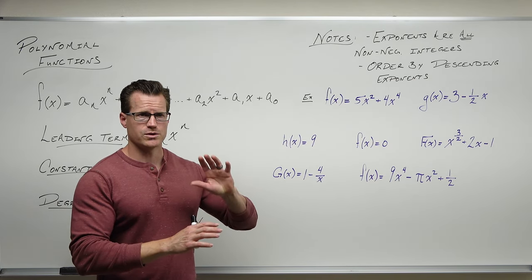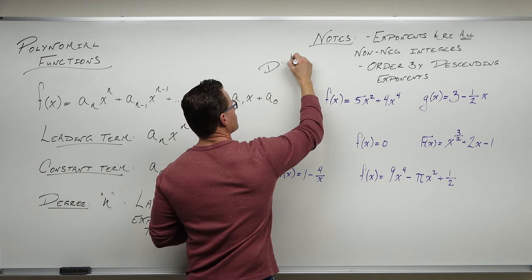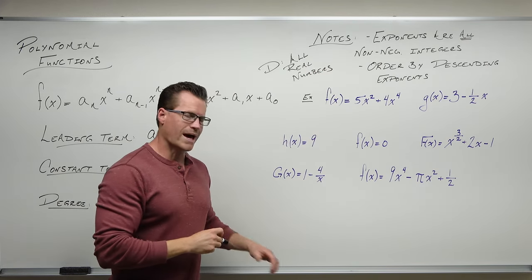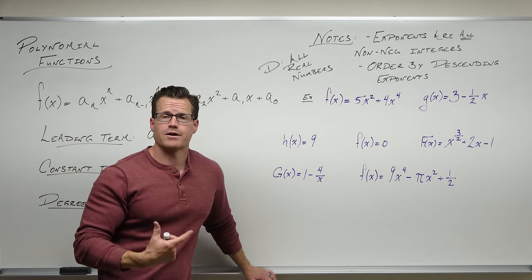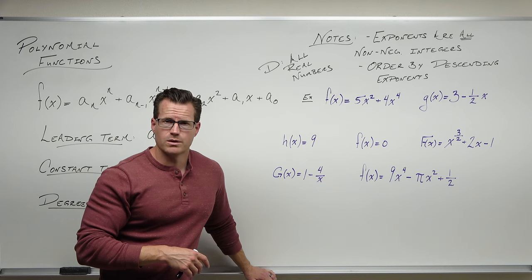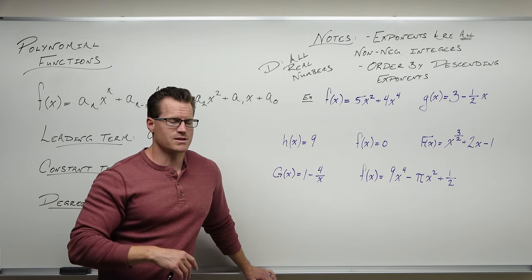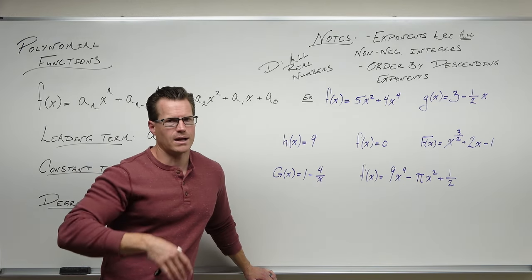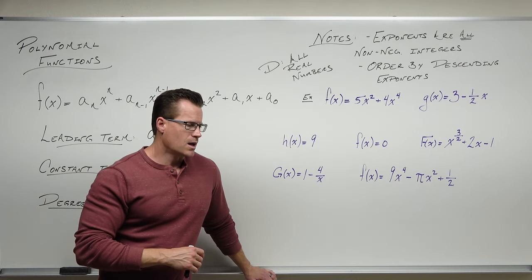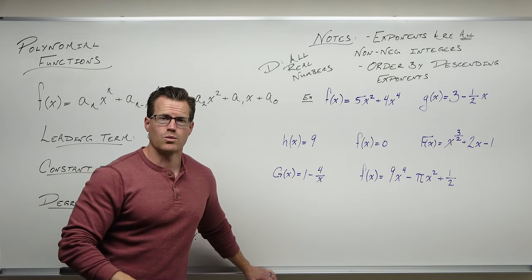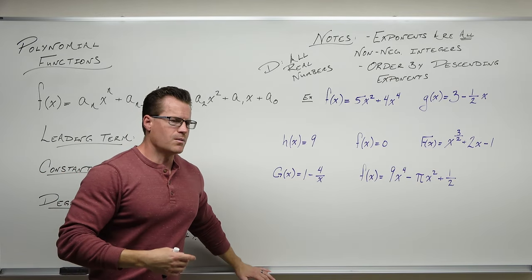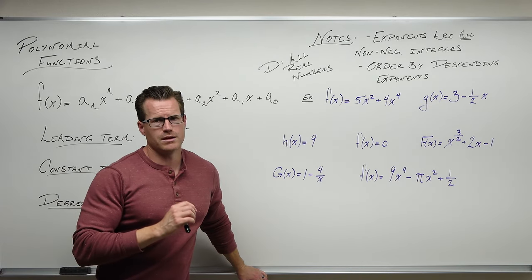You may want to write that down: our domain for polynomials is all real numbers. As soon as we start putting radicals, logarithms, and denominators that have variables inside of them, we often get domain problems — things that say you can only be positive (that's logarithms), or you can be non-negative (that's even roots), or you're dividing by zero (that's a vertical asymptote). For polynomials, none of that applies. Your domain is all real numbers, and your range is either negative infinity to positive infinity, or a half-range depending on the polynomial.